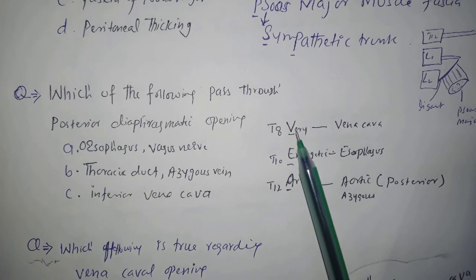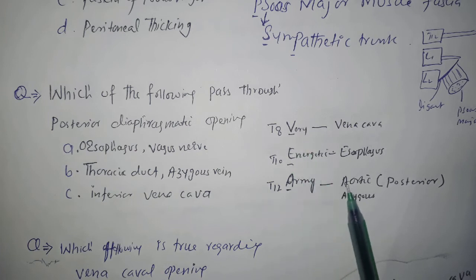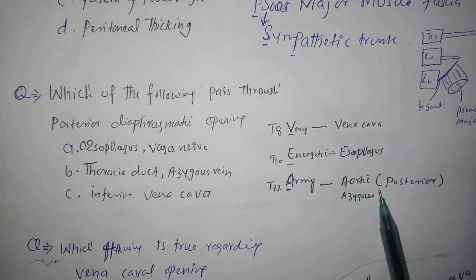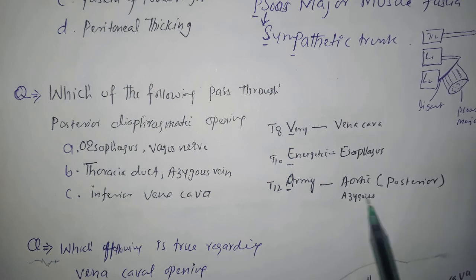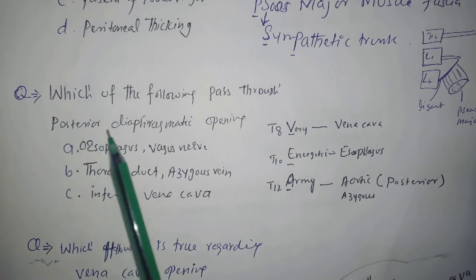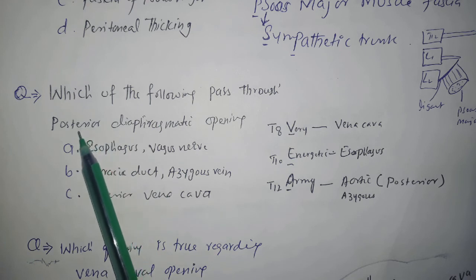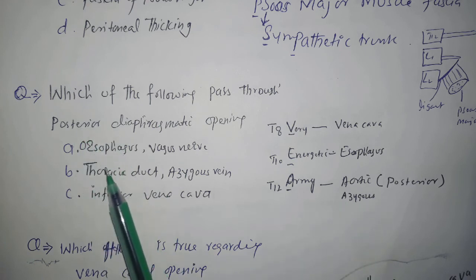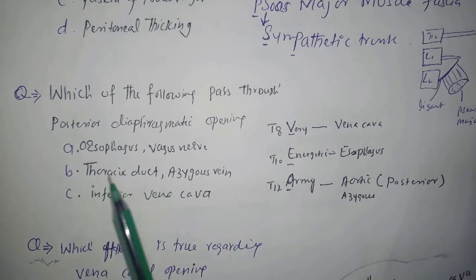For MCQs: when asked about the posterior diaphragmatic opening, that refers to the aortic opening. The structures passing through the aortic opening are the thoracic duct and azygos vein — the answer is B.